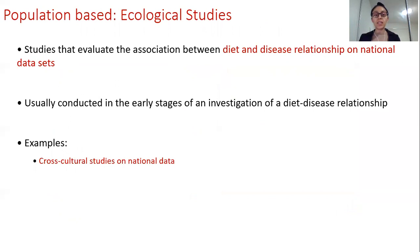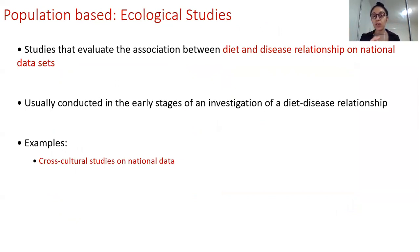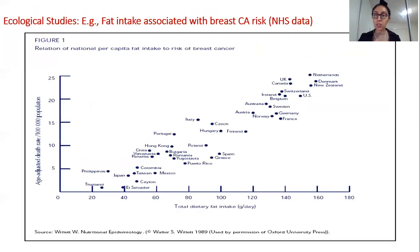Under population-based study designs, you also have ecological studies. In ecological studies, you're actually comparing two variables — trying to correlate them — where you have an independent variable and a dependent variable, and you're investigating the relationship or association between them. I've given the example of diet and disease, which is illustrated in the cross-sectional study graph in the coming slide.